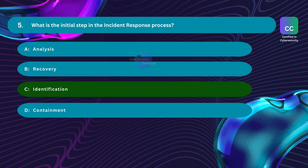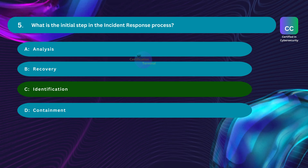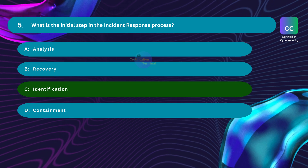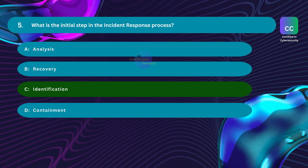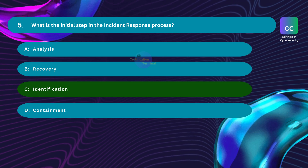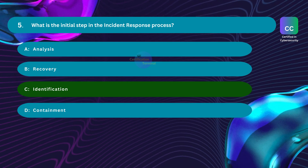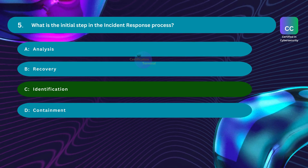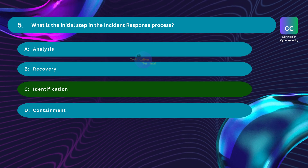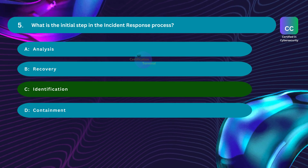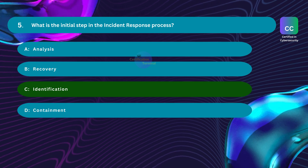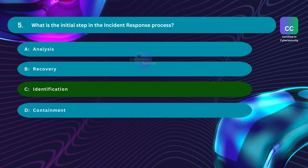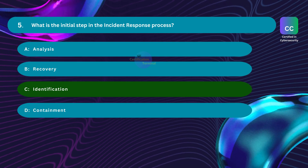Option A, analysis, is incorrect — analysis involves a detailed examination and investigation of the incident to understand its nature, extent, and impact. Option B, recovery, is incorrect — recovery aims to restore affected systems, data, or services to their normal operational state after an incident. Option D, containment, is incorrect — containment involves preventing the spread or escalation of the identified incident to mitigate its impact on the organization.